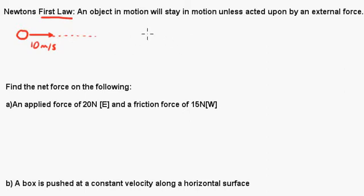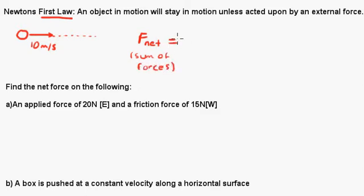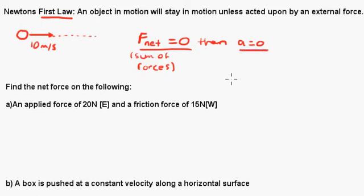Mathematically speaking, the net force is the sum of all the forces. If that equals zero, then the acceleration will also equal zero — there's going to be no acceleration. So if you have a net force equaling zero, then the acceleration is zero, and the object stays in motion if there's no net force acting on it.